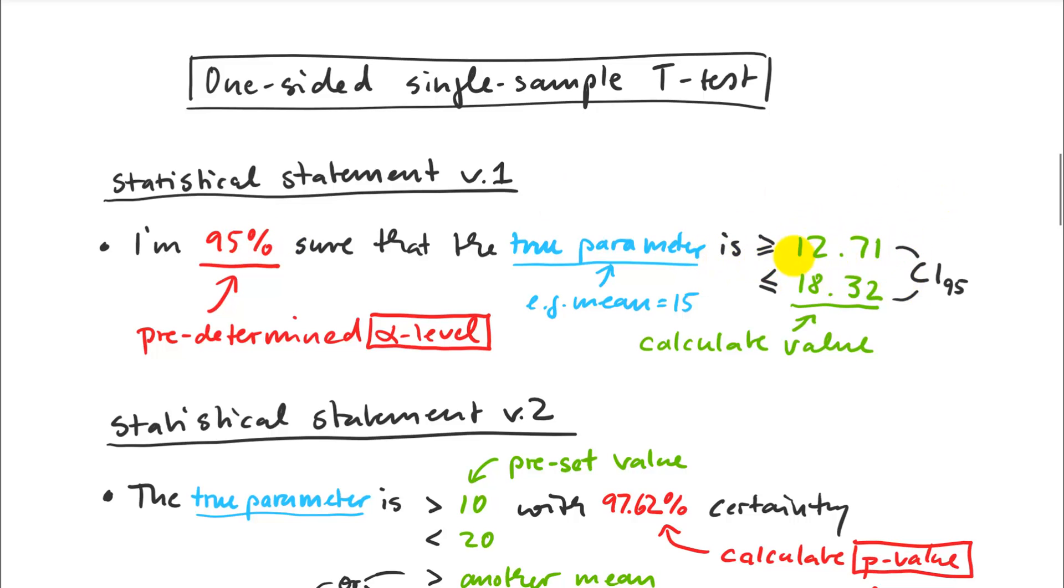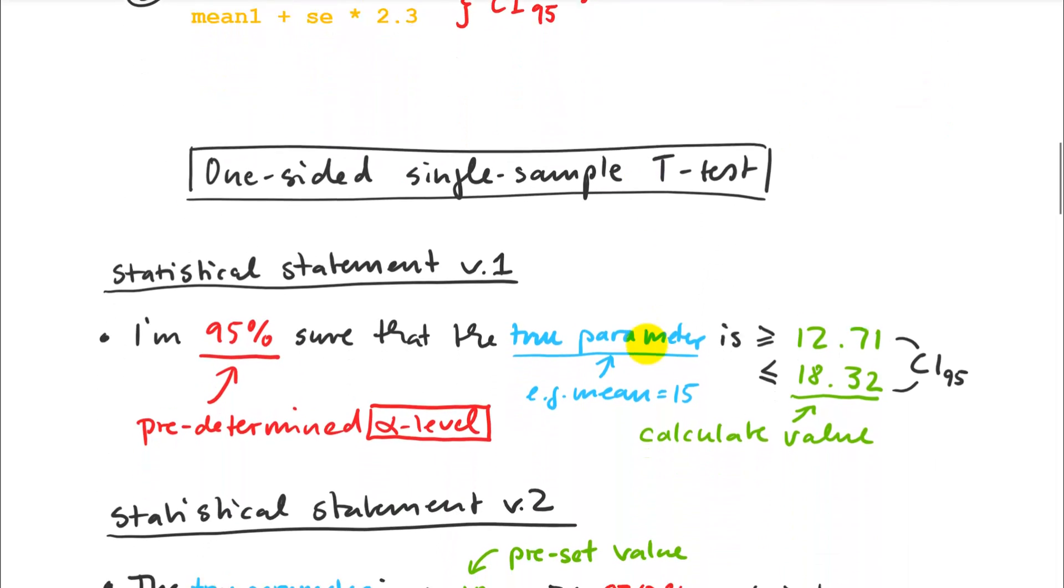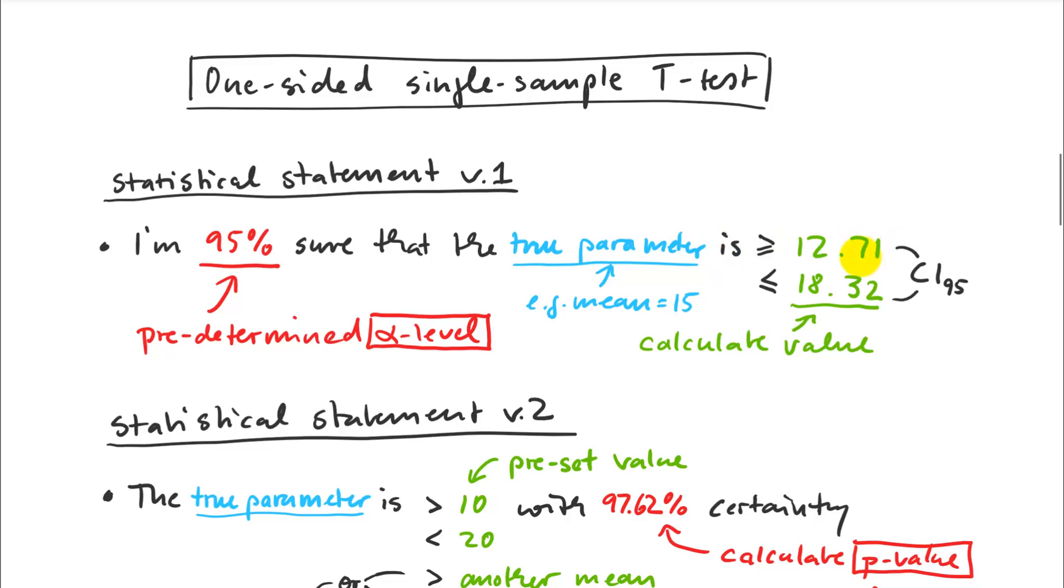So it's a predetermined alpha level. And what flows from this are these numbers here. You've seen it. These are actually two questions that are asked separately. I'm asking, is the true parameter larger than a particular value or smaller than a particular value? Those were two separate commands. If we go back here, this is the one, this is the other. So I'm really asking only one question at a time. And then I combine those to get the 95% confidence interval.